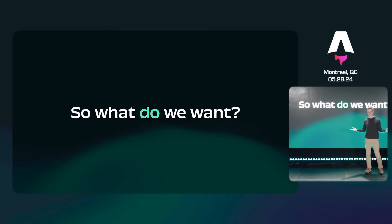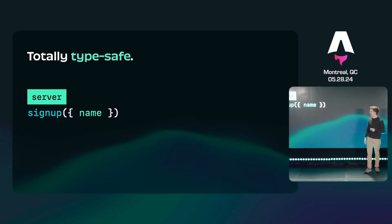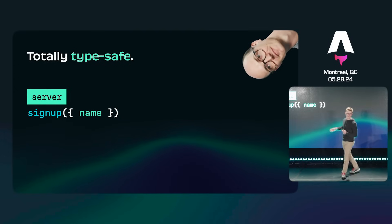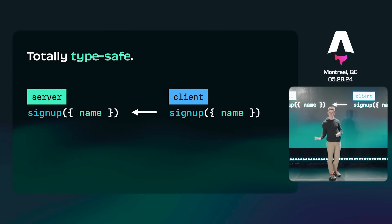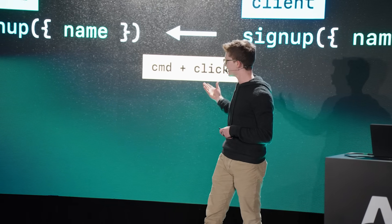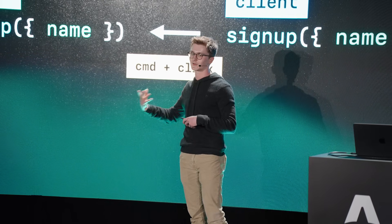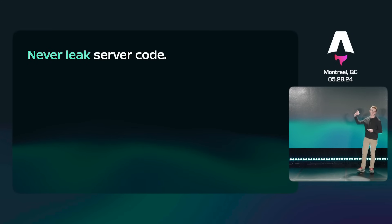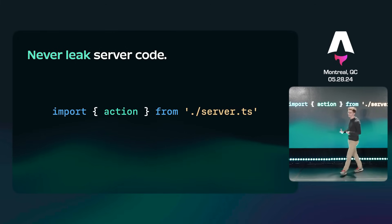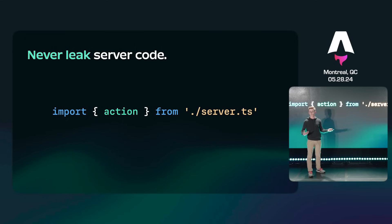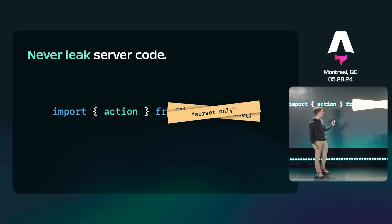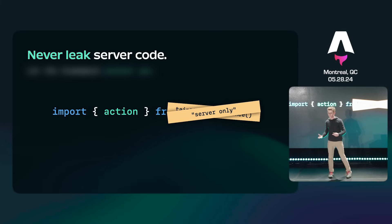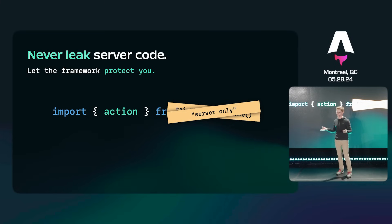I'm glad you felt that pain before. So from there, what do we want if we know what the bad looks like? First off, we want something that's totally type safe. We want something where you can just write a function on your server, and you can call it from the client with the exact same name, the same input, same outputs, all just using JavaScript. When you command-click in your editor, you should jump right to the server implementation. No magic file paths or fetch calls to remember. In the process, though, it should never be possible to leak server code into someone's browser. If you use fancy solutions like RPCs or server actions, you can import server code straight into the client, and this can be tricky — you might need to protect sensitive code with taint object reference and server-only. In a way, you're kind of protecting your code from the framework. But really, the framework should be protecting you. It should be impossible to leak server stuff onto the client while still getting all those benefits. That was a key principle while we were designing.